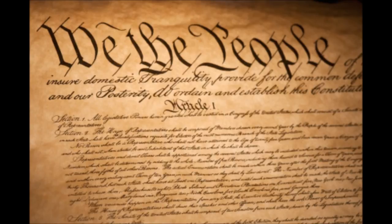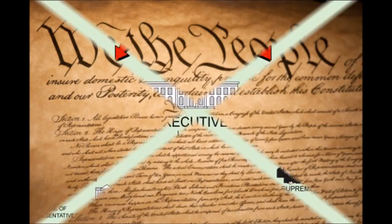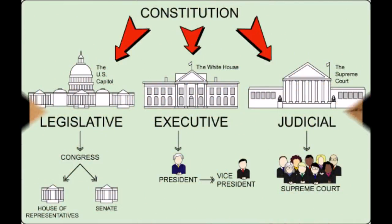Thanks to the Philadelphia Convention of 1787, and their socialization of the war debt, the Federal Constitution established the framework for the operating structure of the central government, which is composed of three branches: the legislative, the executive, and the judicial. The legislature writes the laws, the executive enforces the laws, and the judiciary interprets the laws.